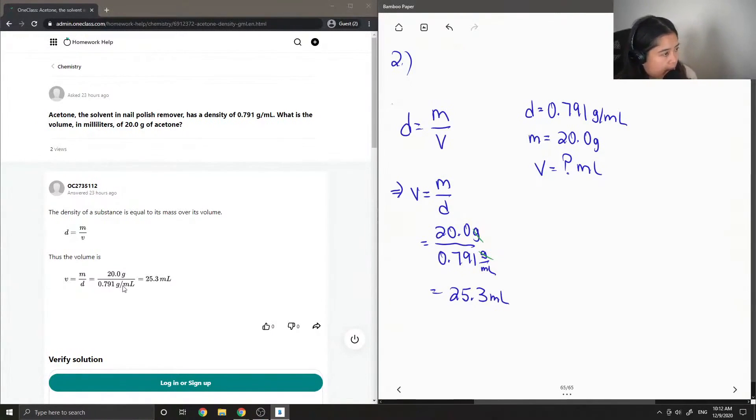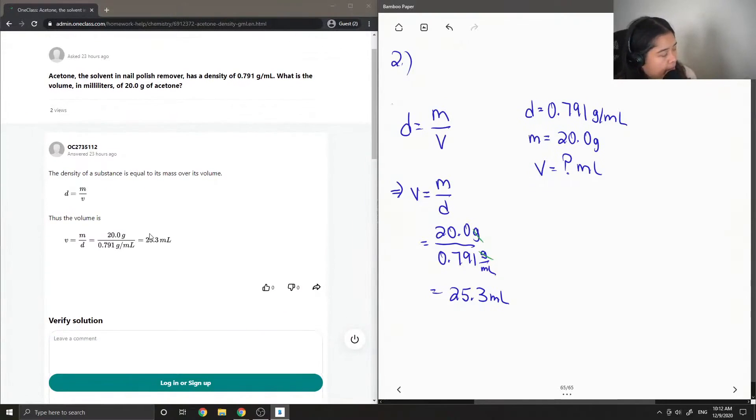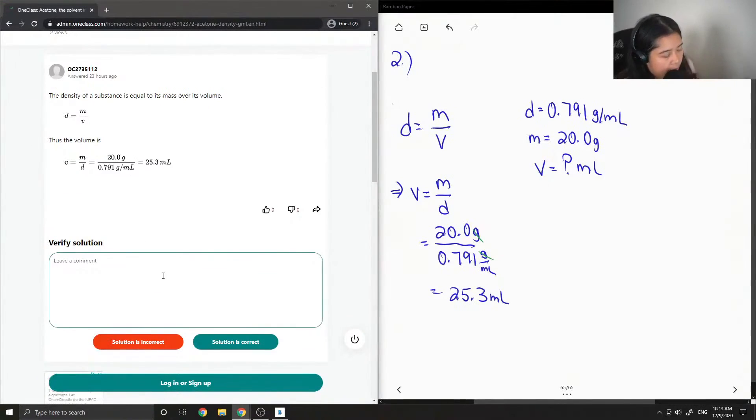Okay, so the junior tutor said the density of a substance is equal to its mass over its volume. Thus, the volume is mass over density, 20 divided by 0.791, and they got 25.3 milliliters. This solution is correct.